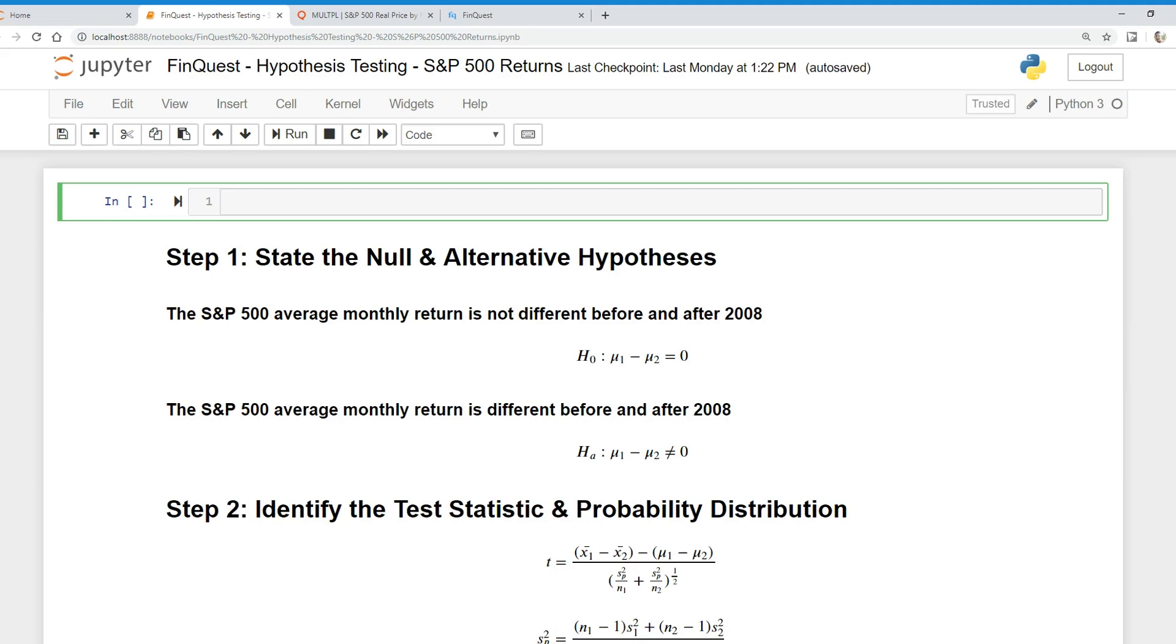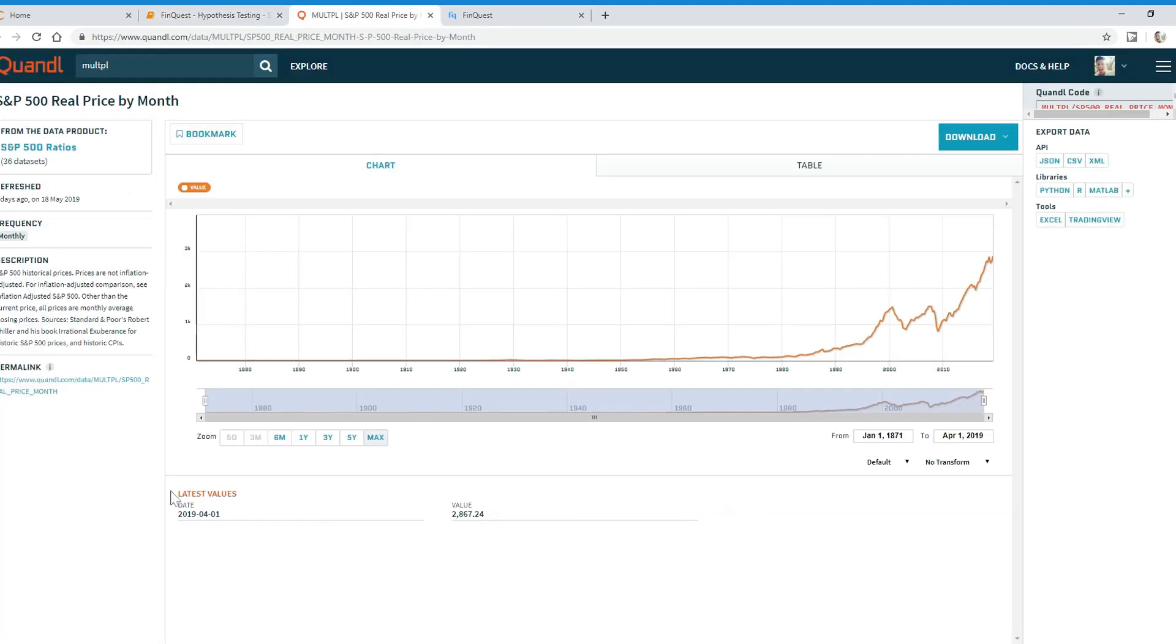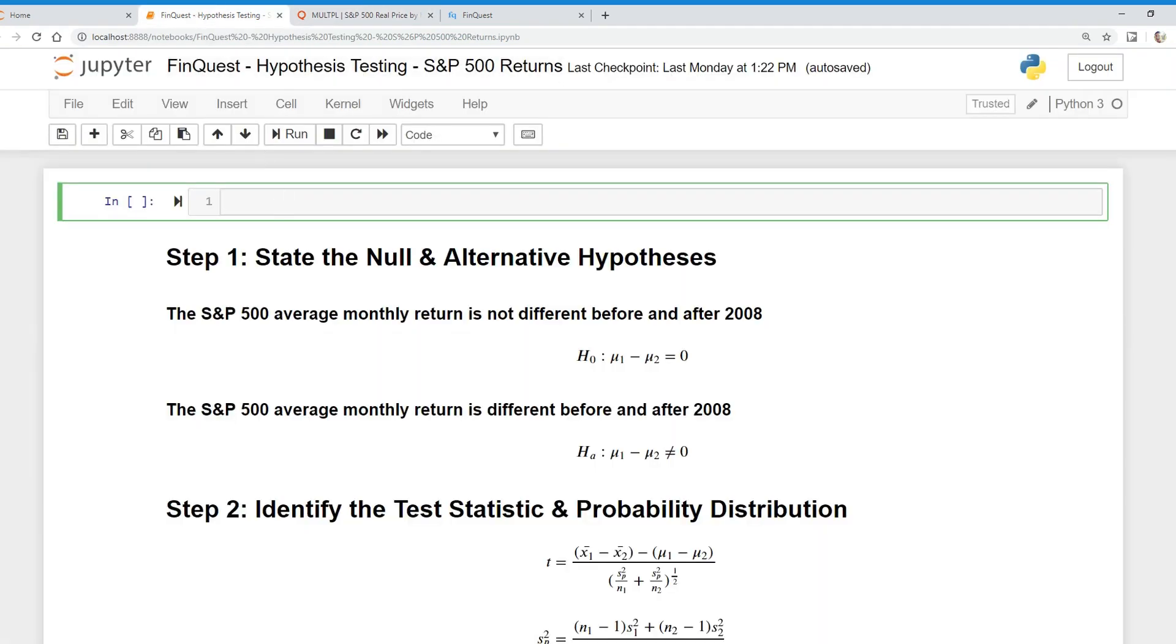The data we're going to be working with is from Quandl. You can create an account with Quandl and get access to this free dataset. It's called MULTPL (M-U-L-T-P-L). Let's get started.